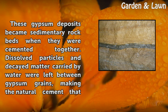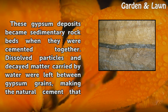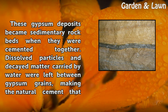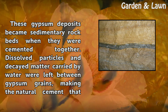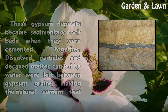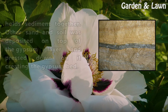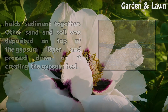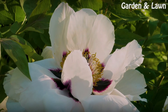Gypsum crystals formed in the mineral-saturated sea brine and sank to the ocean bed. These gypsum deposits became sedimentary rock beds when they were cemented together — dissolved particles and decayed matter carried by water were left between gypsum grains, making the natural cement that holds sediment together. Other sand and soil was deposited on top of the gypsum layer, pressing down on it and creating the gypsum bed.